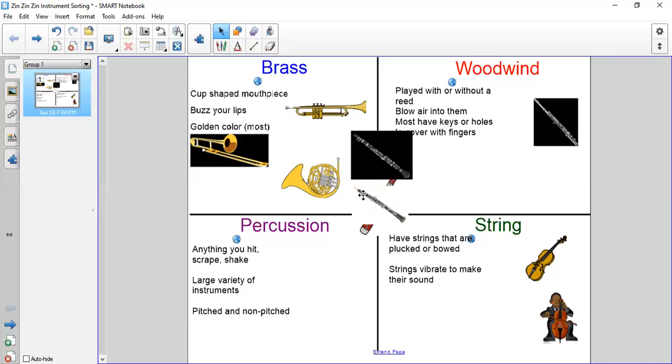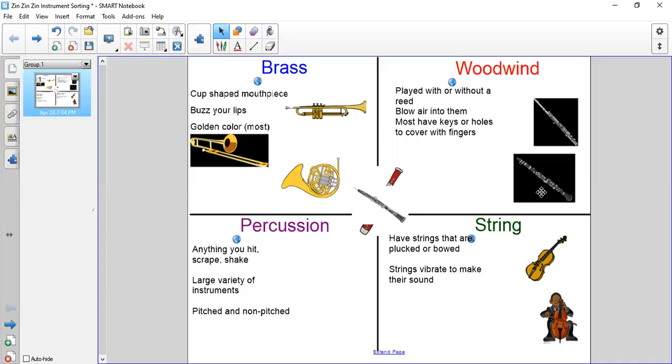On an oboe, you can't really see in my picture, but the reed sticks out on top—it's open. You put your lips right on the reed itself. Both of those instruments would be part of the woodwind family.